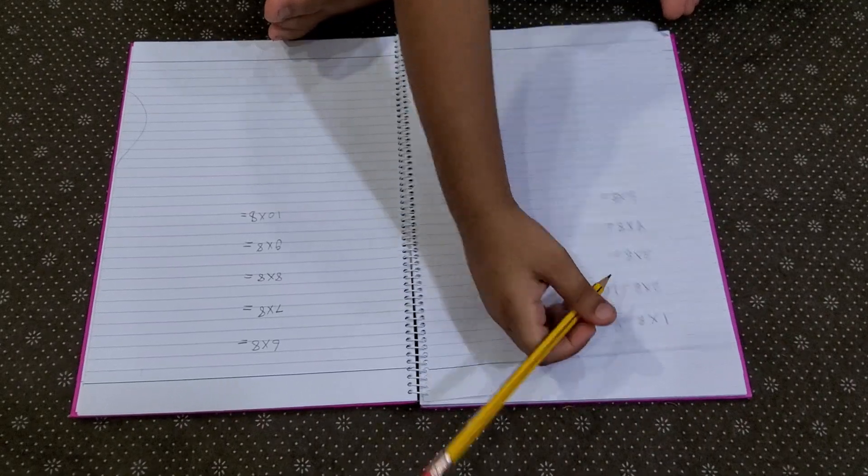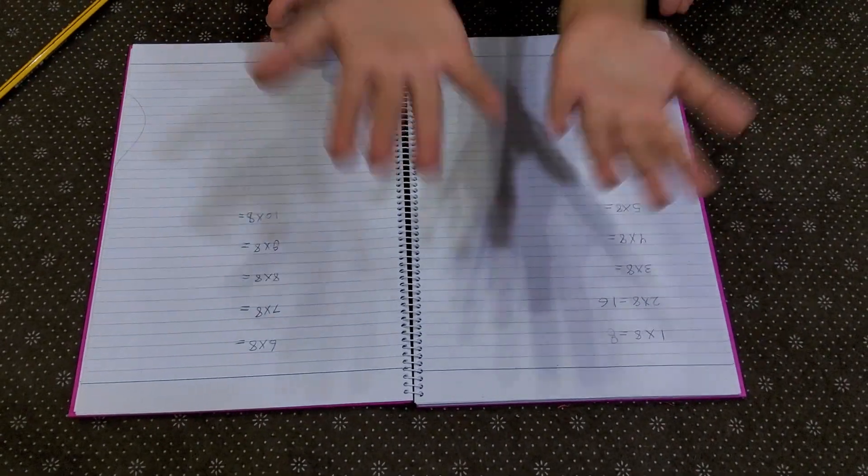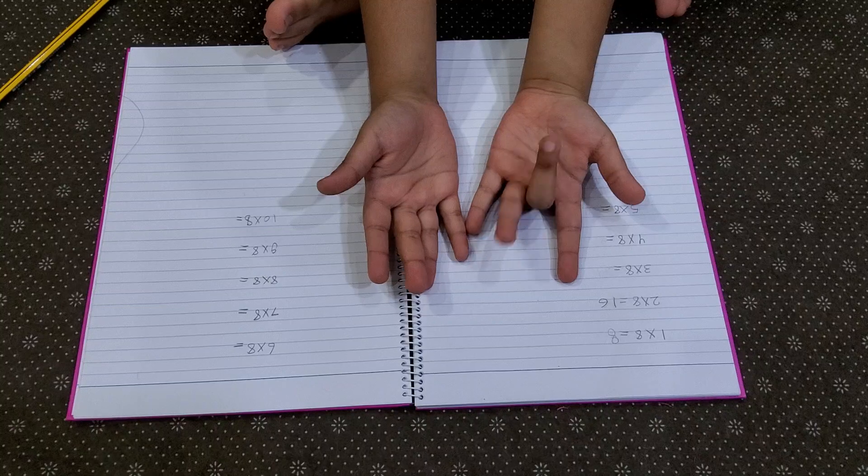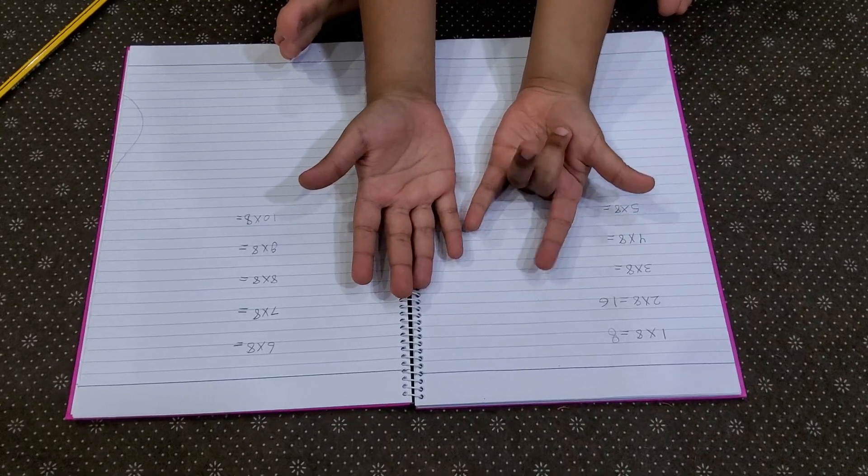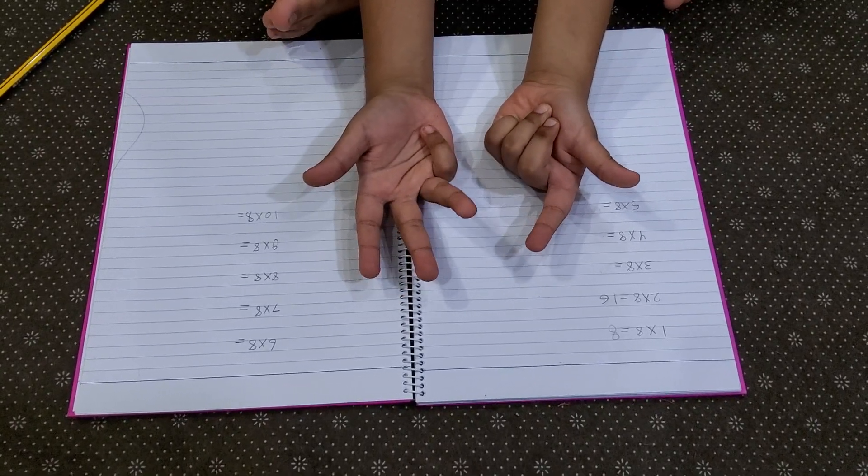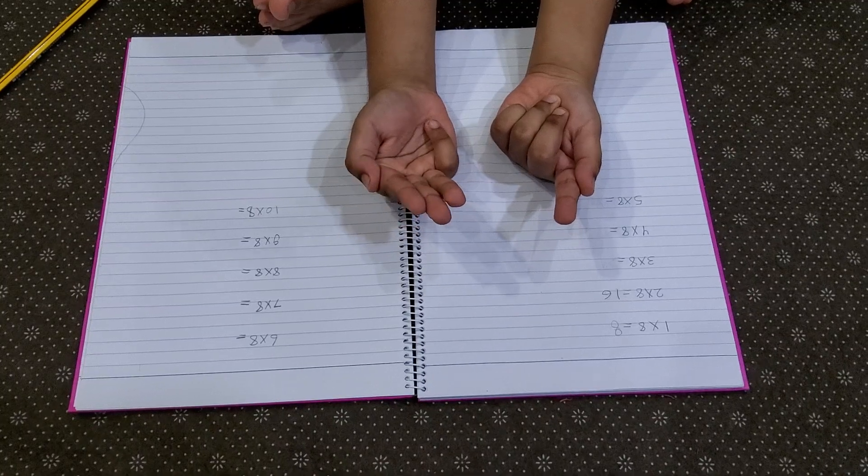And eight multiplied by three. So we bend number three and three fingers after it. So it's going to be twenty-four.